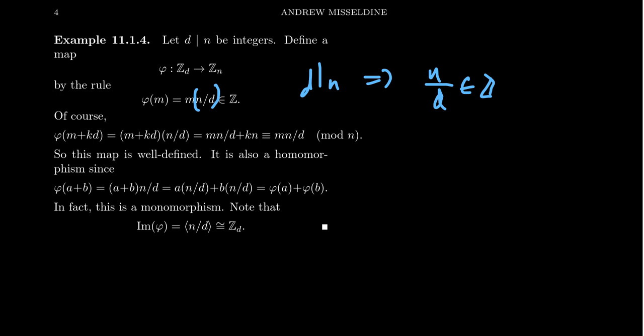Now we have to be concerned, is this map well defined? Because after all, Zd here is the set of representatives of congruence classes. So if we choose a different representative from the same congruence class, do we get the same element? That always has to be of concern when you define a function based upon representatives of some equivalence relation. So if we were to consider that, take phi of m plus kd.